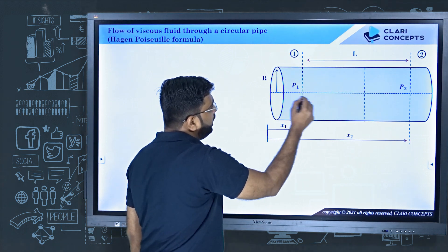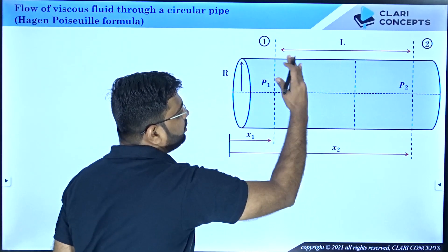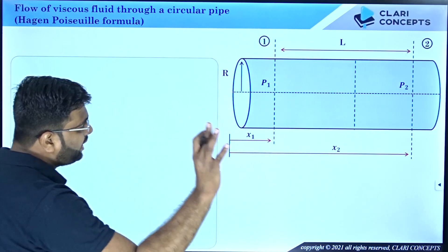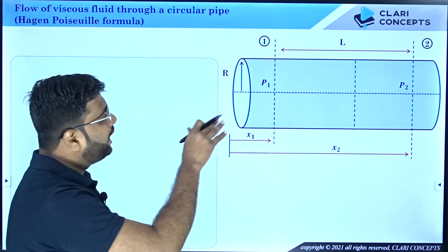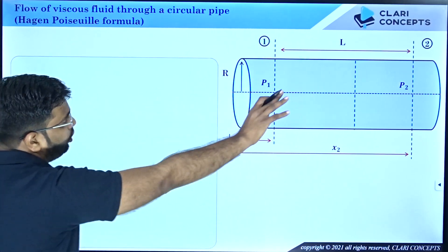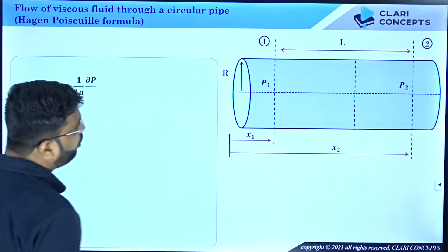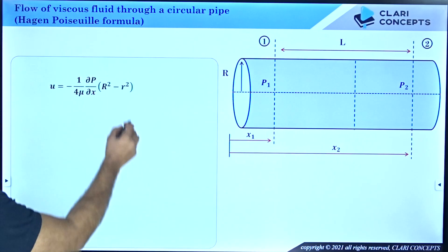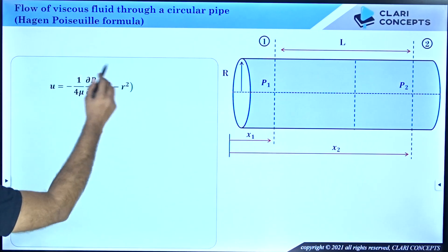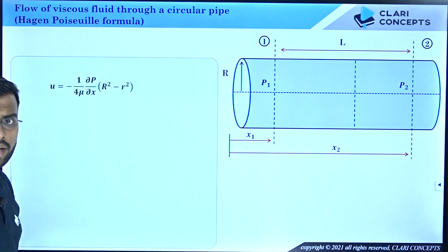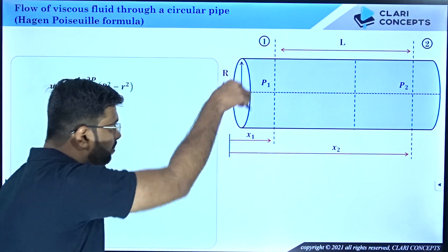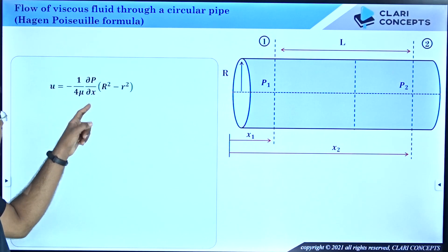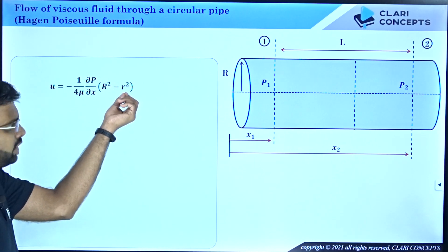In section 1 we have pressure P1, in section 2 we have pressure P2, and the length between them is L. If the pipe radius is capital R, then we have seen that on a given section, if you have laminar flow — viscous flow — the velocity profile will be parabolic. The equation describing the velocity distribution is: U equals minus 1 over 4μ times (∂P/∂x) times (R² minus r²).